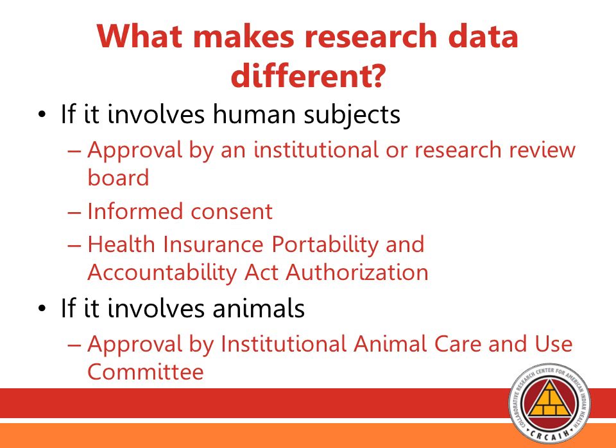If your data involves human subjects, you want to protect your individual study subjects. To do that, you typically get approval from an Institutional Research Review Board — an independent body that reviews your research and ensures it follows ethical principles. Specifics may include having an informed consent document so participants know about the research and their role in it. If using medical records, you will need a Health Insurance Portability and Accountability Act authorization. Other regulations vary by type of research, so it's good to start with an IRB to determine what you need to follow.